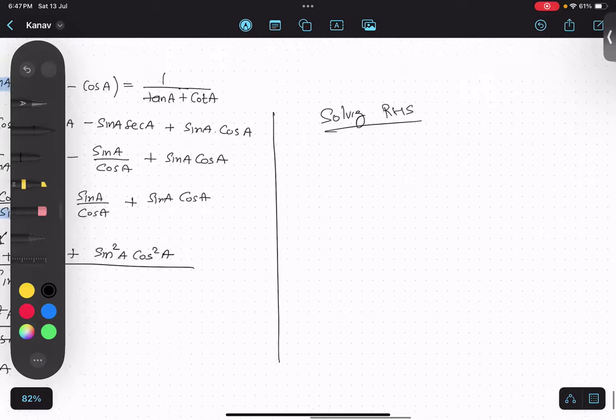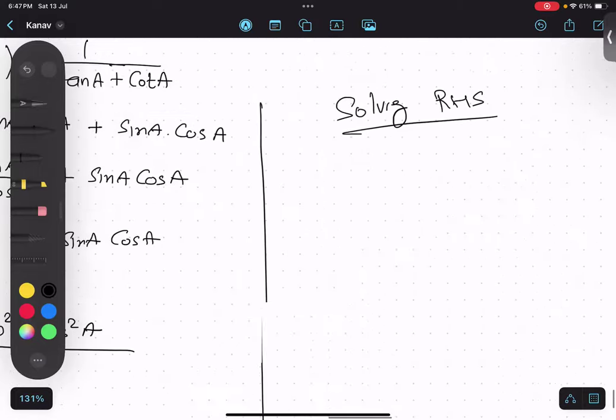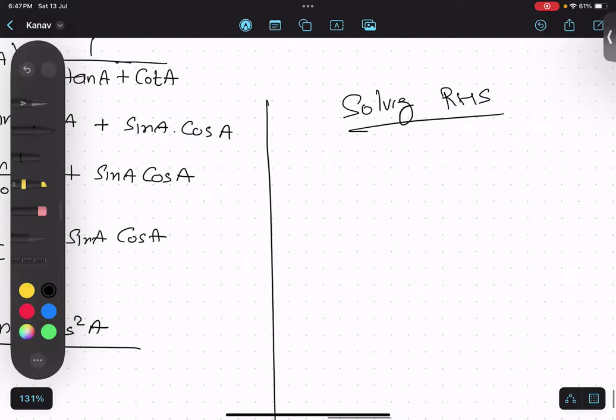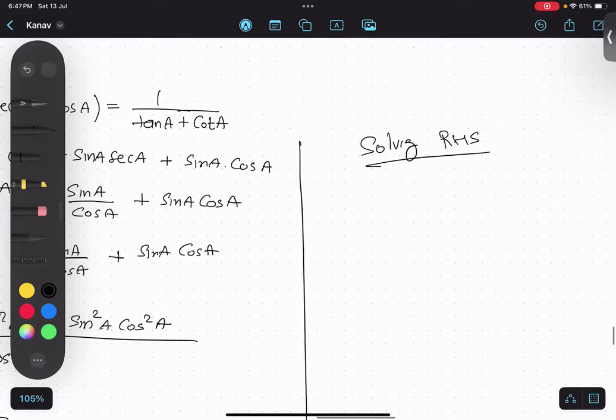So I'll convert it into sin and cos. We have one upon sin upon cos, so just cos A upon sin A.